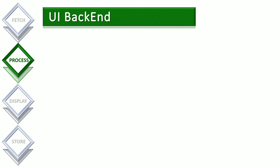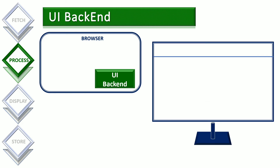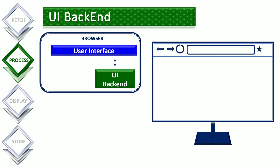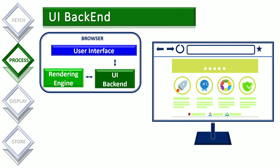The third component involved in processing the server response is the UI backend. It is responsible for drawing basic widgets like combo boxes and windows. It is used by the user interface of the browser to draw the forward and backward buttons, address bar, bookmark button, etc. It is also used by the rendering engine to paint the server response. Behind the scenes, the UI backend uses operating system UI methods and exposes a generic interface that is not platform-specific.